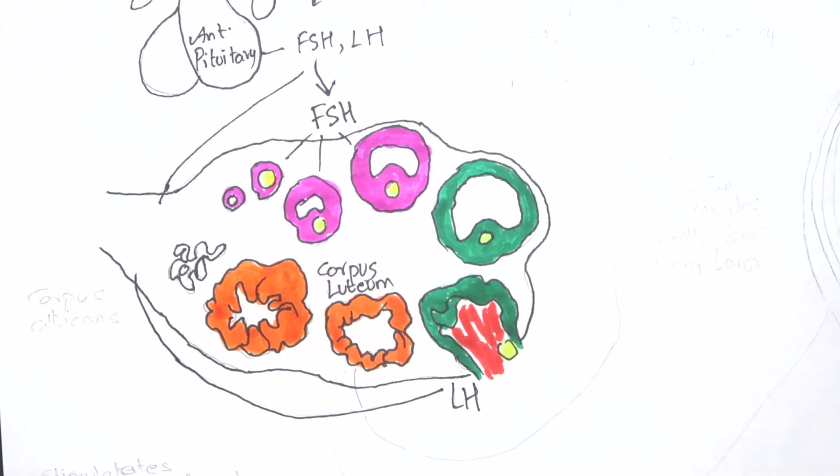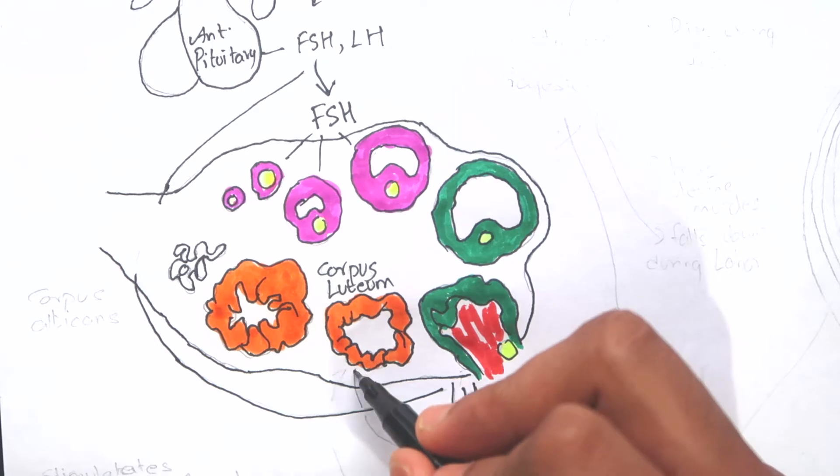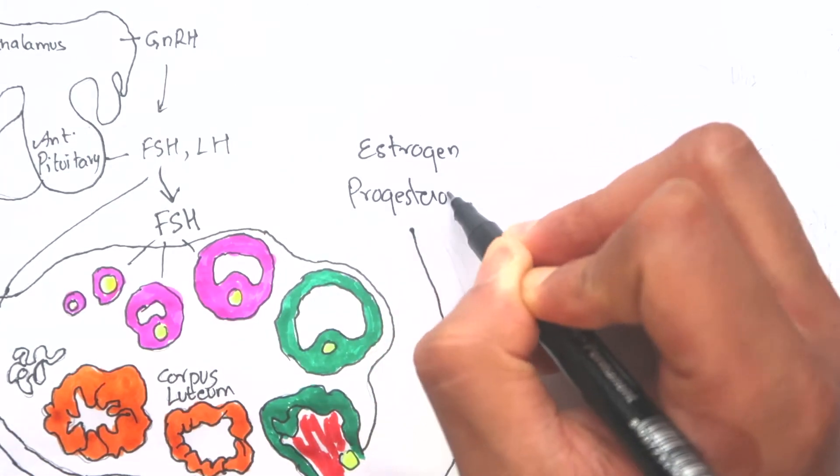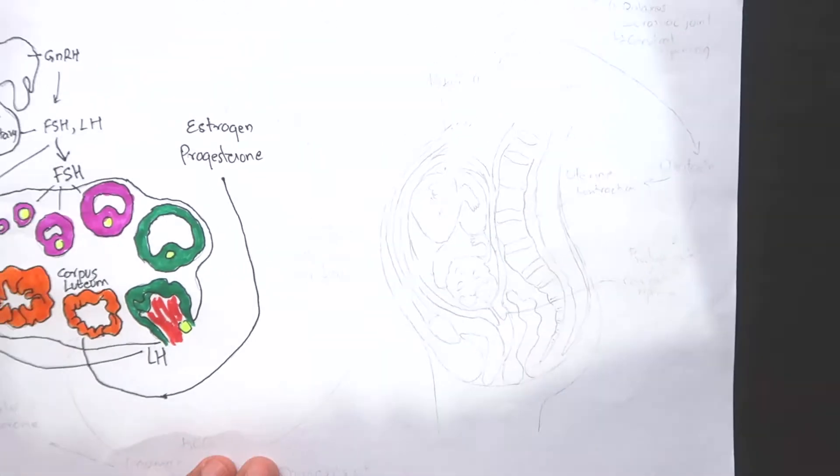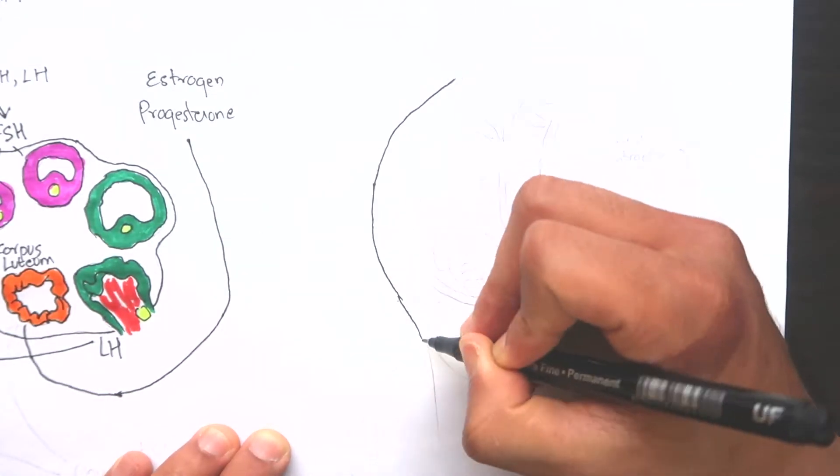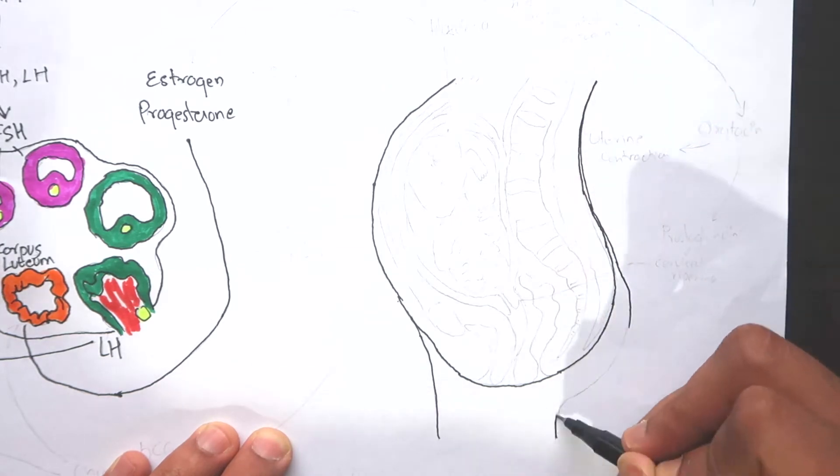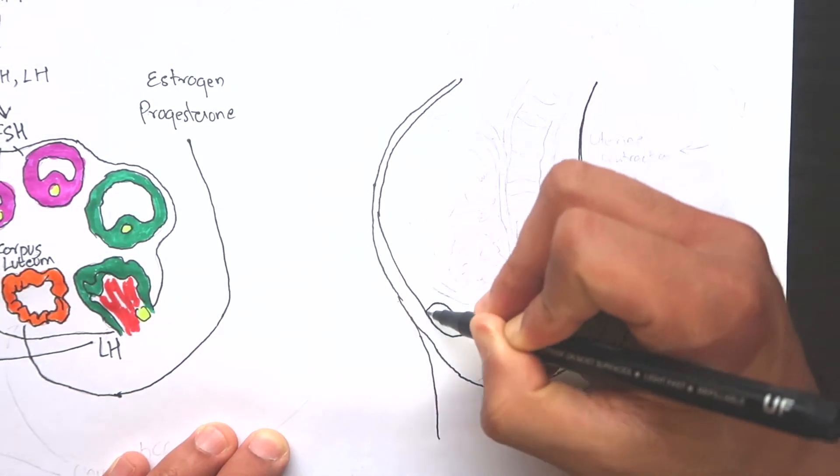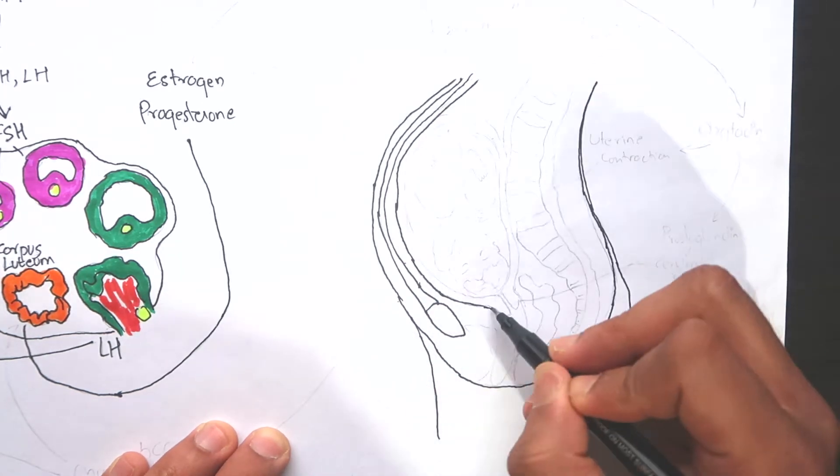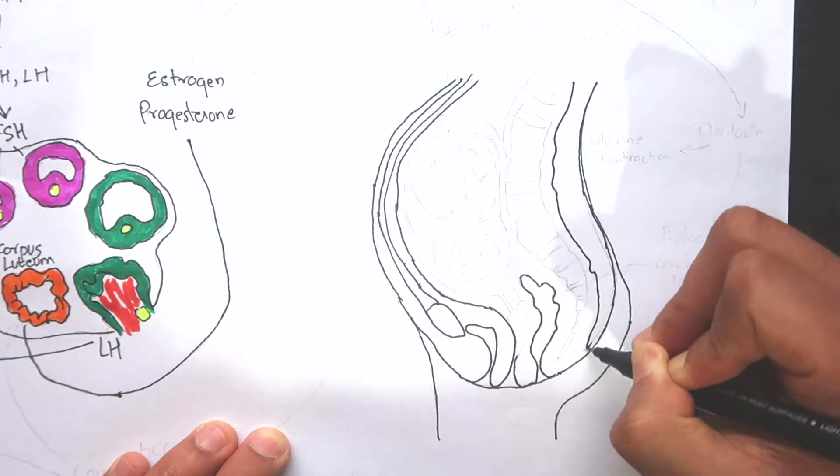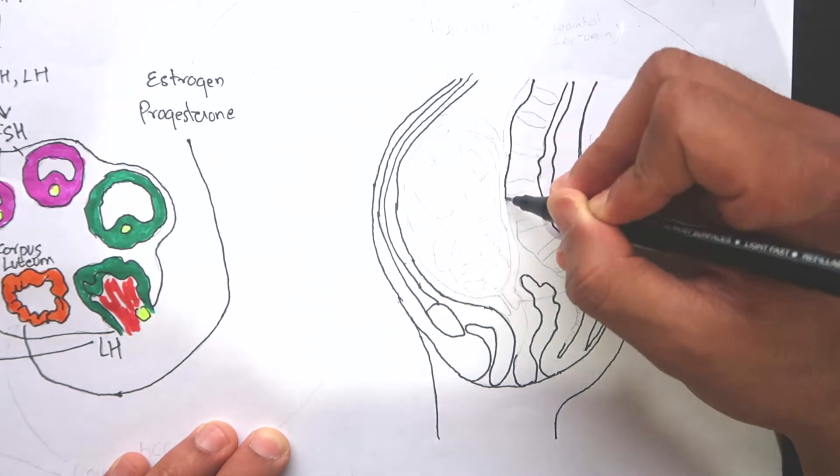After ovulation, the graafian follicle, shown in green color in this picture, forms corpus luteum. The corpus luteum produces estrogen and progesterone hormone which are responsible for the preparation of endometrium for zygote implantation. These hormones, estrogen and progesterone, are both steroidal hormones. Together, they play an important role in the maintenance of pregnancy.